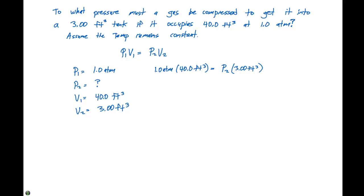If we solve for P2, we can rearrange this expression to get 1.0 atmospheres times 40.0 feet cubed divided by 3.00 feet cubed. Our feet cubed units are gonna cancel, and we're gonna be left with atmospheres. And our final answer will be 13.333 atmospheres.